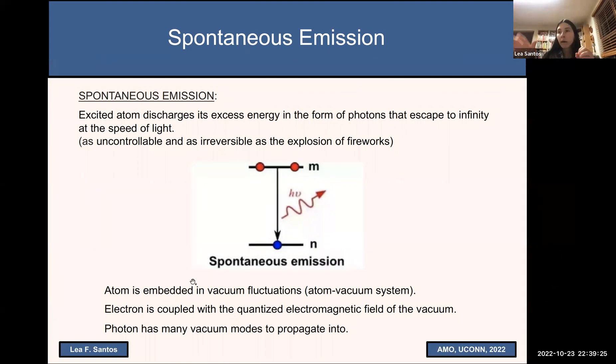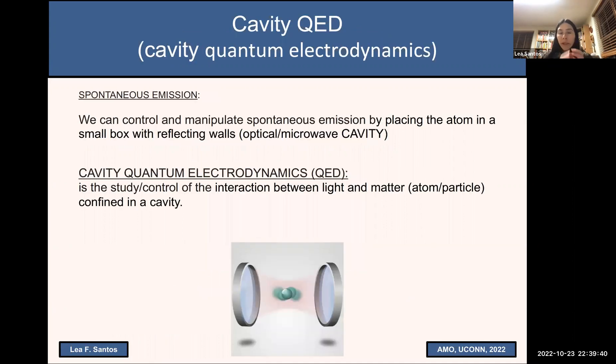And this process is possible because this atom is not completely isolated. It's embedded in vacuum fluctuations. The photon has many channels to decay, many vacuum modes in which it can go. But if we put this excited atom in a cavity with these reflecting walls, we are now going to be modifying these available vacuum modes. And with that, we can now control the spontaneous emission. We can delay it or we can accelerate it.